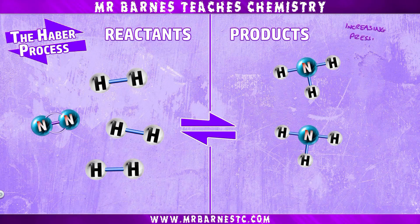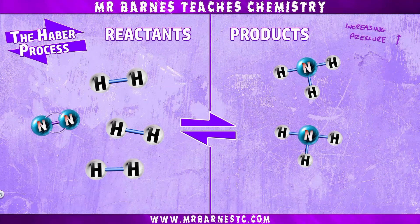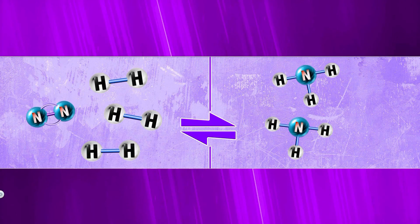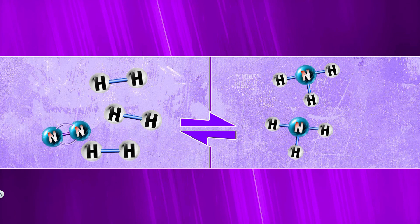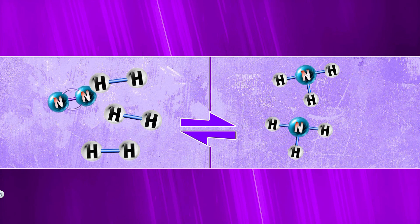Moving on to pressure: by increasing the pressure you are keeping the same number of particles but in a smaller space, as shown here. That means when those particles move around there's less space, so they're more likely to collide with each other. This means there are going to be more collisions per second — more frequent collisions and more reactions occurring.